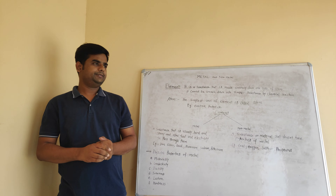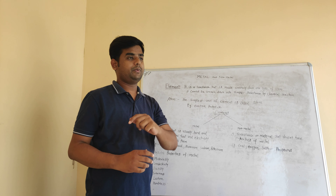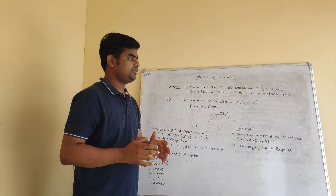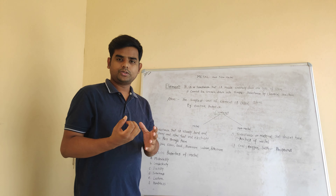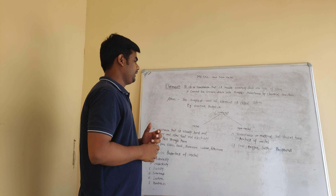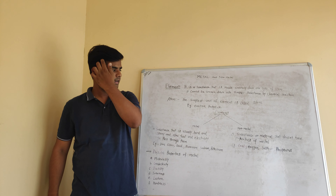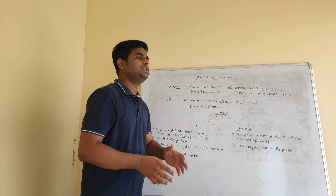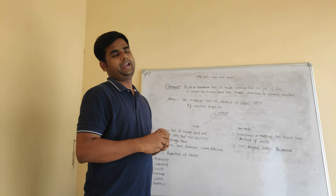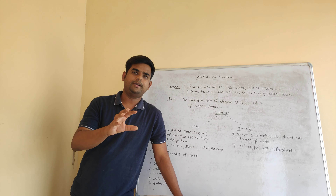It says that an element is made entirely of one type of atom. So what is an atom? Atom is the simplest unit of an element. It is called atom — the simplest unit of element is called an atom.